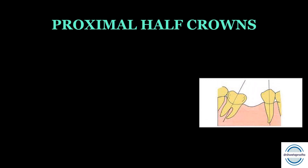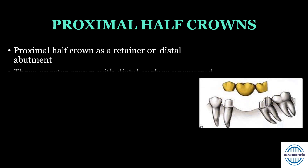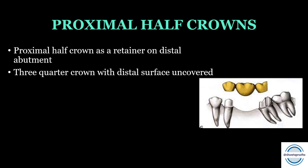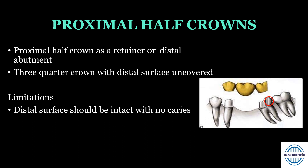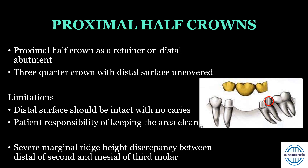Proximal half crown — if orthodontic correction is not possible, or only partial correction is achievable, an FPD can still be made. The proximal half crown is used as a retainer on the distal abutment; a three-quarter crown is planned with the distal surface uncovered. The limitation is that the distal surface must be intact with no caries, and the patient is responsible for keeping that area clean. Also, if there is a severe marginal ridge height discrepancy between the distal of the second and the mesial of the third molar due to tipping, the proximal half crown is contraindicated.